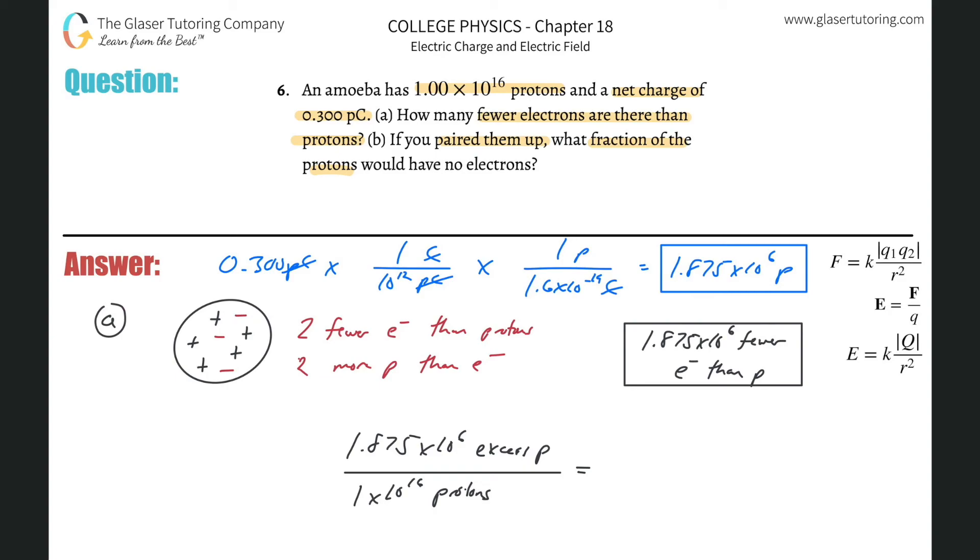And that'll tell us the fraction of the protons that have no electrons. So divide this by now, 1 times 10 to the 16th. And we get about 1.875 times 10 to the minus 10th. And then I'm not thinking about sig figs right now, you can round that if you like. But this would be the fraction. All right? That many to one.